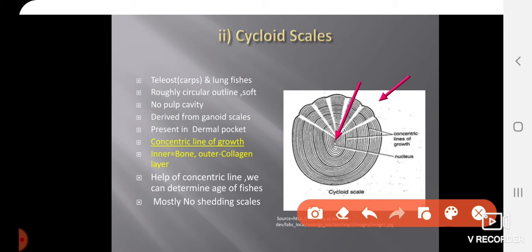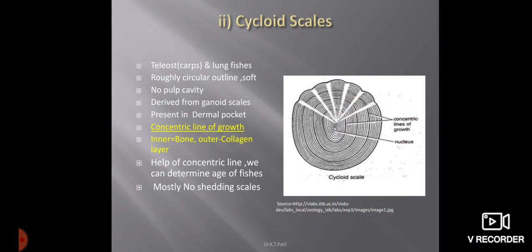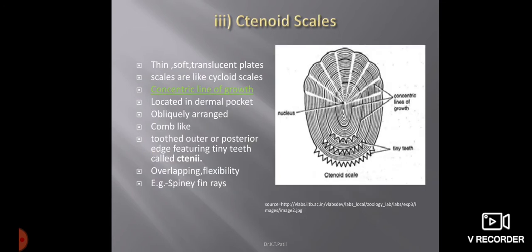The specialty of the Cycloid scale is that it shows concentric lines, also called lines of growth. By counting these lines we can determine the age of the fish. The inner area is called the nucleus. These scales are derived from Ganoid scales. There is no pulp cavity, unlike in Placoid scales. These are non-shedding, overlapping scales, present in a dermal pocket.